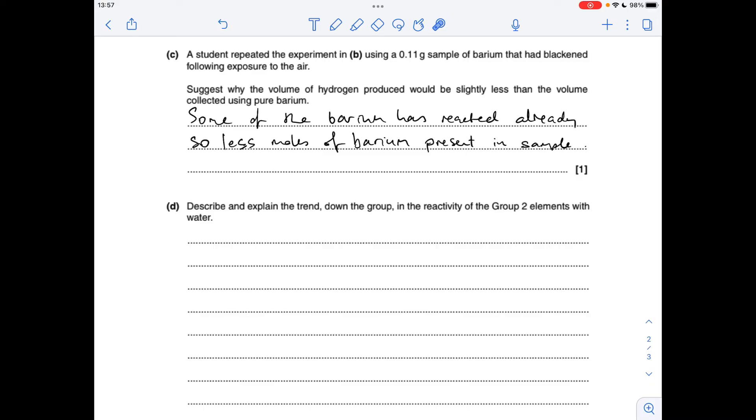Moving on to part C, suggests why the volume of hydrogen produced is slightly less using this sample with the same mass, but it's blackened following exposure to the air. So if you think about what they said at the start of the question, the barium does react with the nitrogen and the oxygen in the air and makes barium nitride and barium oxide. So that's obviously what's happened here. So we've therefore got less moles of barium present in this sample, and therefore we'll get fewer moles of hydrogen formed and therefore a lower volume.